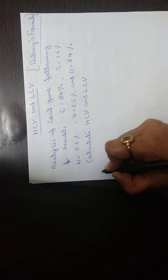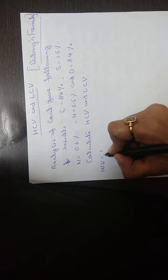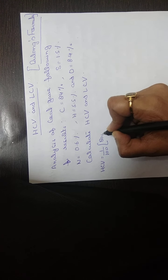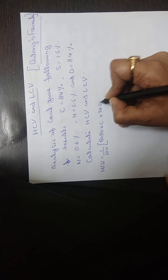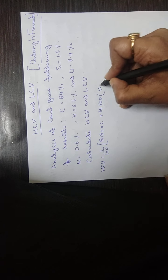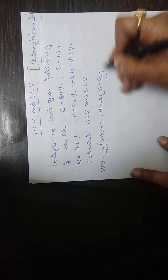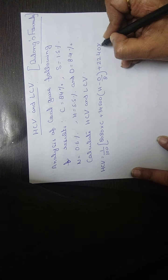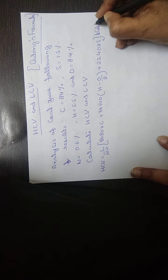Dulong's formula for HCV is: HCV = (1/100) × [8080 × C + 34500 × (H − O/8) + 2240 × S], and the unit is kilocalories per kg.